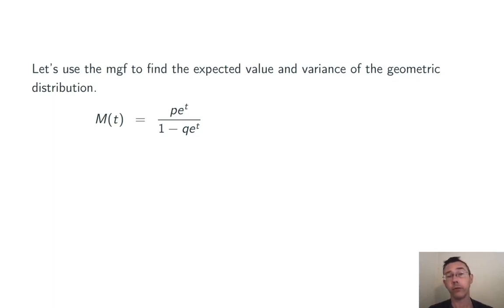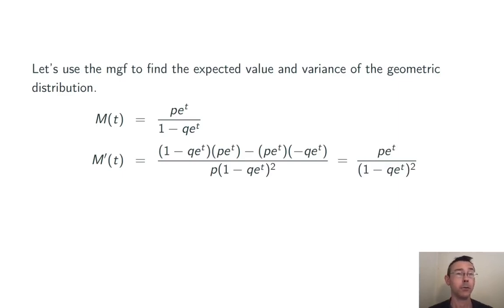Okay, let's put this moment generating function to work. Let's compute the expected value and variance of the geometric distribution. We take a derivative using the quotient rule with respect to t of course, and then plug in 0 and simplify to get that M'(0), the expected value of the random variable here, is p over (1 minus q) quantity squared. Of course, as you would expect, all of the t's are gone at the end of this calculation. The expected value of the random variable x should not depend on t. That was just a dummy variable that we introduced.